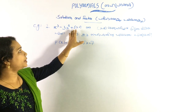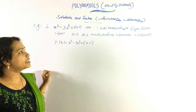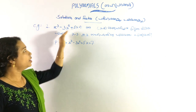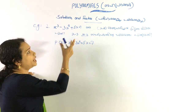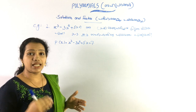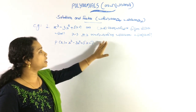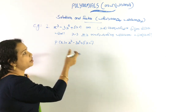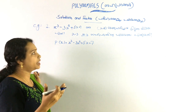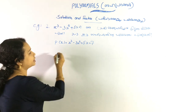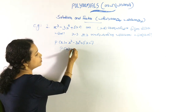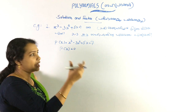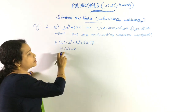Another example: x³ - 3x² + 5x + 7. We need to find the remainder when divided by (x - 3). Since it is a cubic polynomial, we use the remainder theorem and evaluate P(3). (x - 3) is not a factor here; we are finding the remainder.